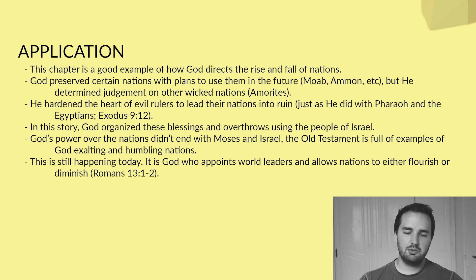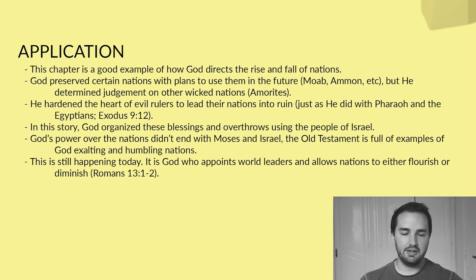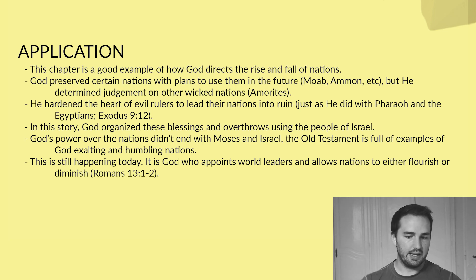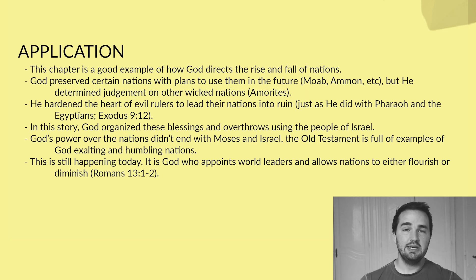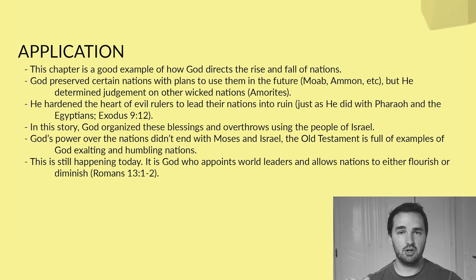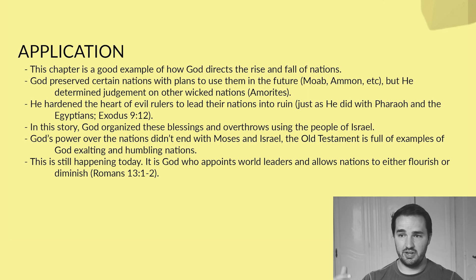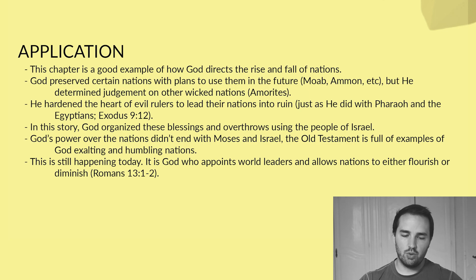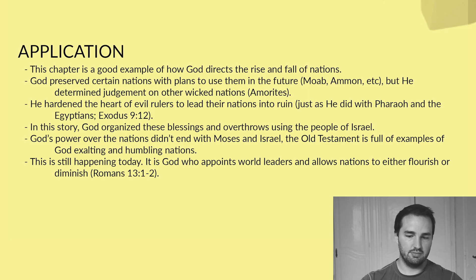In terms of our application for today, this chapter is a good example of how God directs the rise and the fall of kingdoms. God preserves certain nations with plans to use them in the future — nations like Moab and Ammon — but he determined judgment on other kingdoms like the Amorites and King Sihon. He hardened the heart of certain rulers to lead their nations into ruin by fighting against God's people and resisting God's will, just as the text tells us he did to Pharaoh's heart, and Pharaoh ended up leading Egypt into humiliation and destruction. In this story, God organized these blessings and overthrows of the nations using the people of Israel directly in their military force.